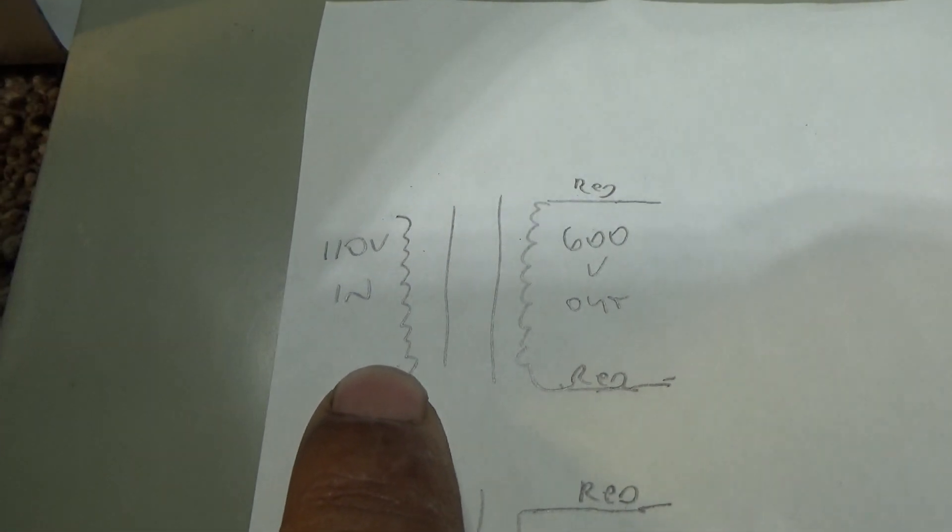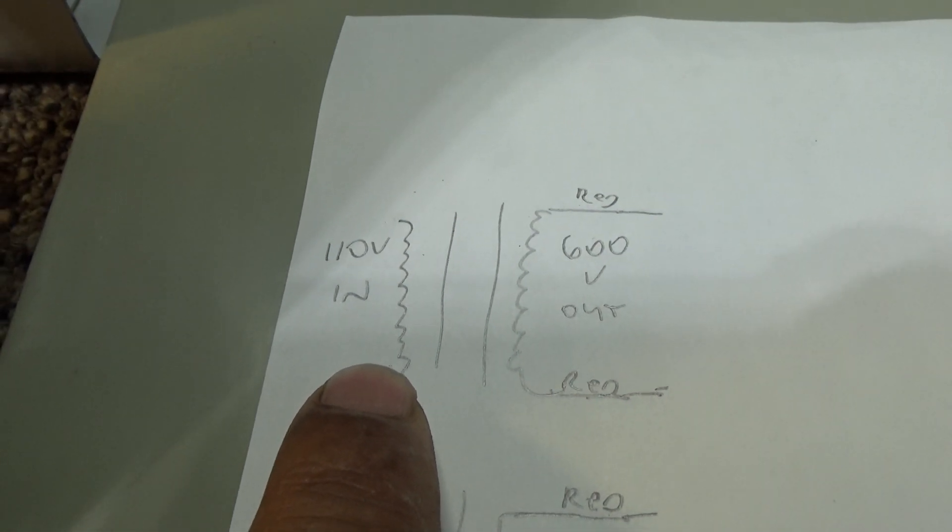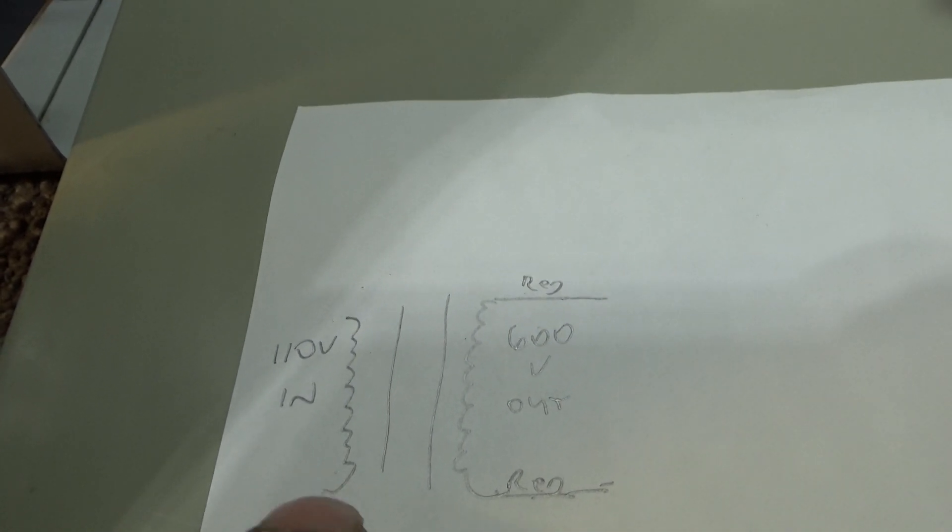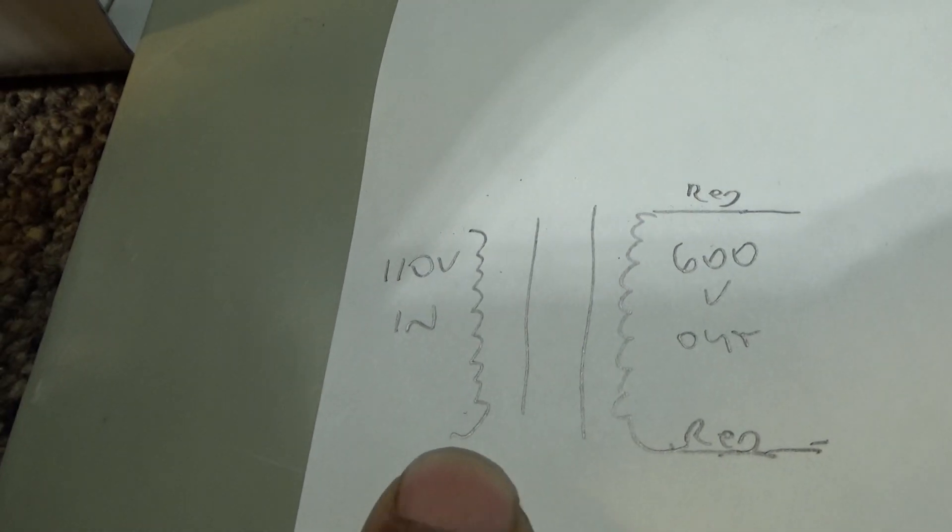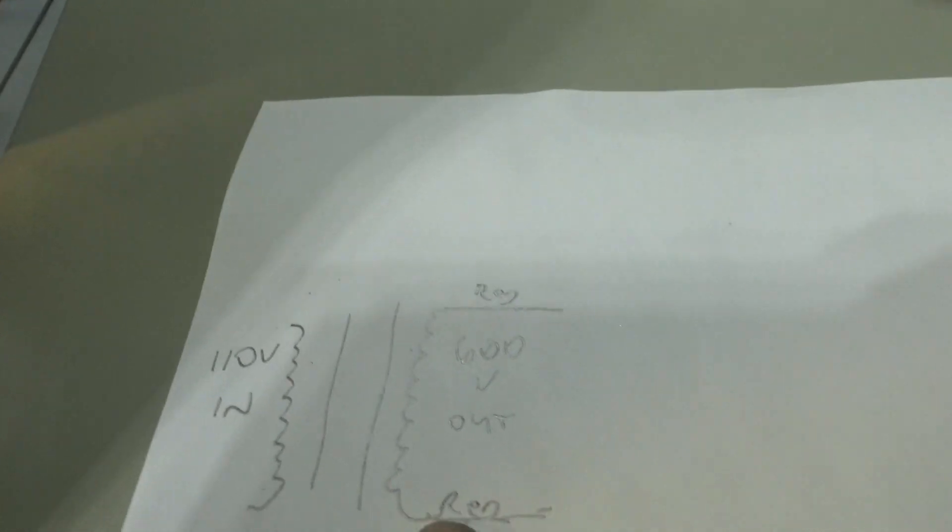This is just a quick schematic of the transformers only. That's the input side, your normal 110 house AC coming into the winding on that side. The only thing we're using on these transformers is the two reds, the high voltage out. These transformers put out about 600 volts each.